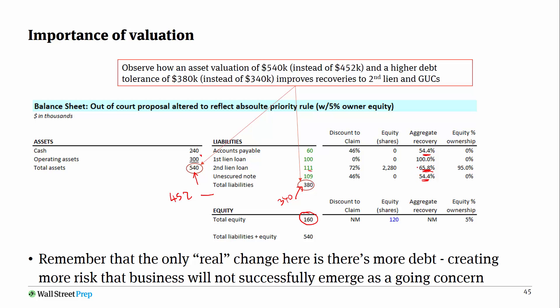So everyone on paper does better — the equity is worth more in paper value. But in practice, if you're comfortable providing more debt reinstatement and still feel like you're going to be solvent, then all the debt exchanges are going to have higher recoveries. Just keep in mind that the only real change here is that there's more debt, and that creates more risk that the business will not successfully emerge as a going concern. So the creditors may be happy in the short term, but the business in practice now has more leverage on the books.